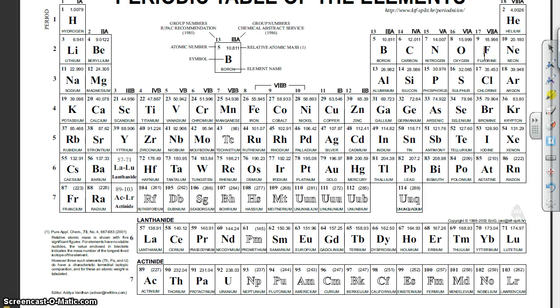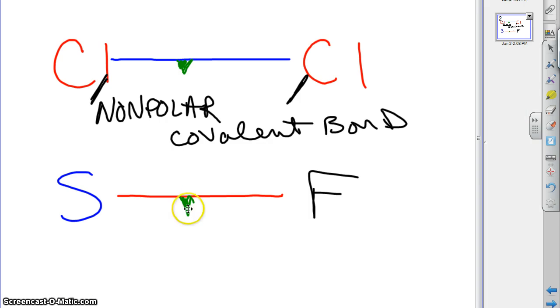And so, fluorine is going to pull harder than sulfur, but only by a little bit. And so, that flag, it's going to come over towards fluorine, but he's not going to pull it across the line. He's not going to take it. Rather than the flag being right there in the center, as it was up here in the non-polar covalent bond, the flag is going to be towards fluorine, but not across the line.